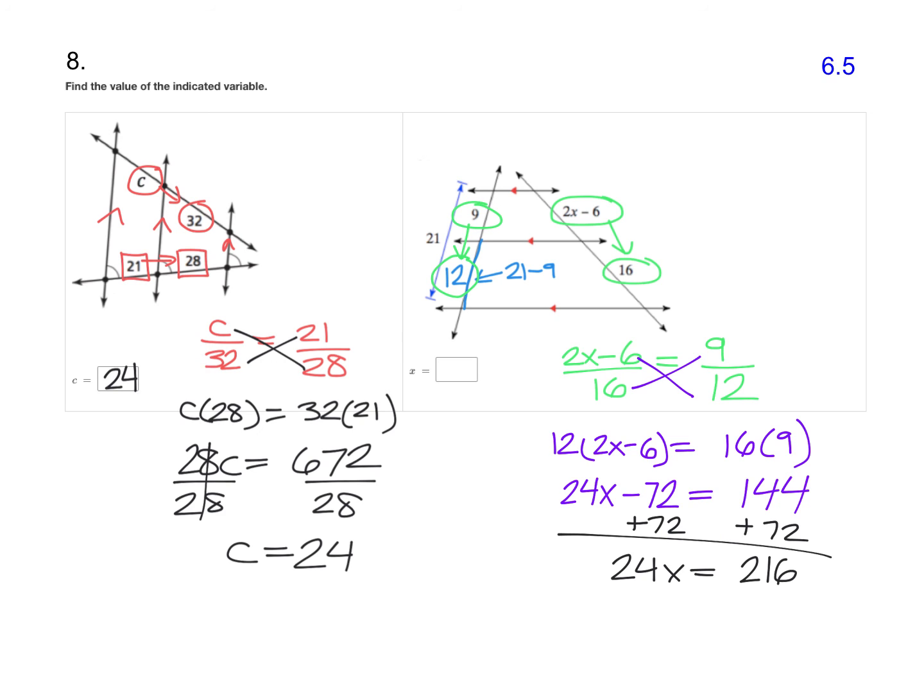And now we're just one step away from our answer. Divide each side by 24. And when you do 216 divided by 24, you end up with 9. So X is equal to 9 is your answer to that second one.